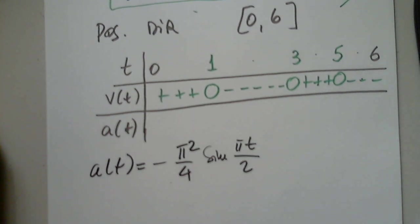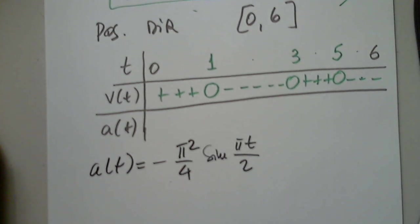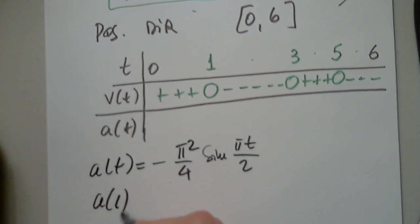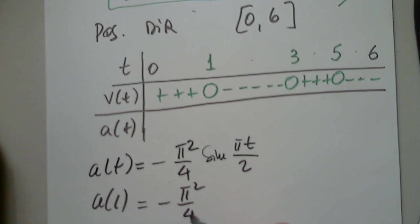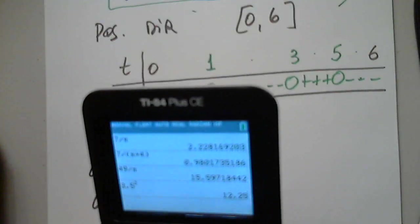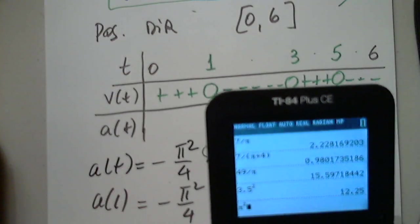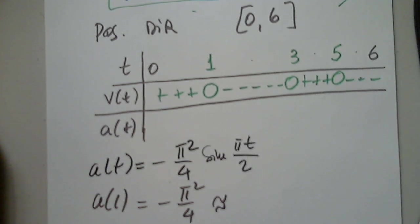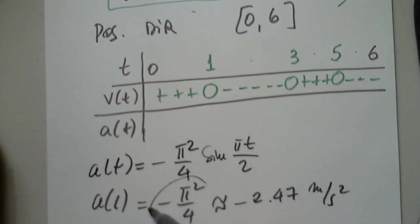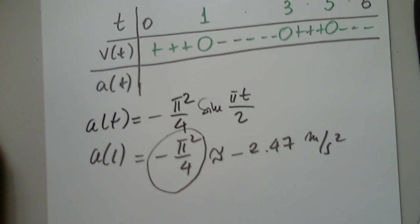And then after A of T, it wants A of 1. Okay, A of 1. So sine of pi over 2 is positive 1, right? So this is negative pi squared over 4. Do they want an approximation or not? It doesn't say to use an approximation. If it doesn't, I would enter it like this.